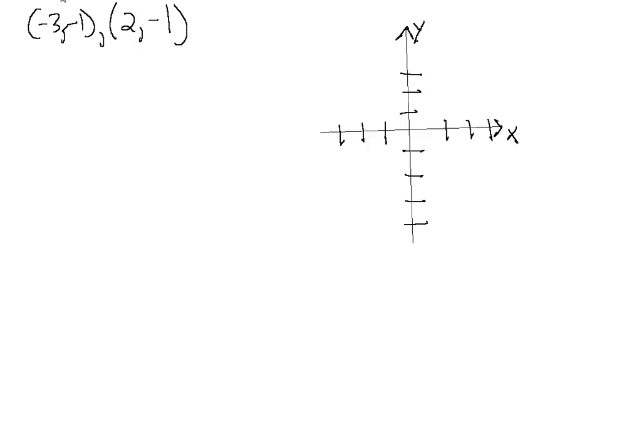So how do we find the slope? Well, let's go ahead and plot these points and see what we're looking at. So we have minus three and minus one, so that point's going to be right here. It's point one, and we have a two and a minus one. And that point's going to be right here, so that's point two.